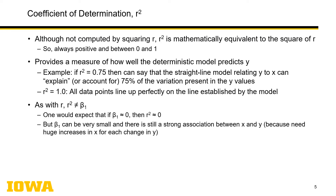In other points, as with r, r-squared is not equal to beta 1 — don't think it's equivalent to the slope. You might say if beta 1 is around 0, r-squared must be around 0. A beta 1 near 0 is a flat line; however, it all depends on your units. If your x values go from 1 to a million and your y values go from 0 to 1, you would have a very flat line but it could have a very strong r-squared. A slope near 0 does not necessarily mean r-squared near 0.